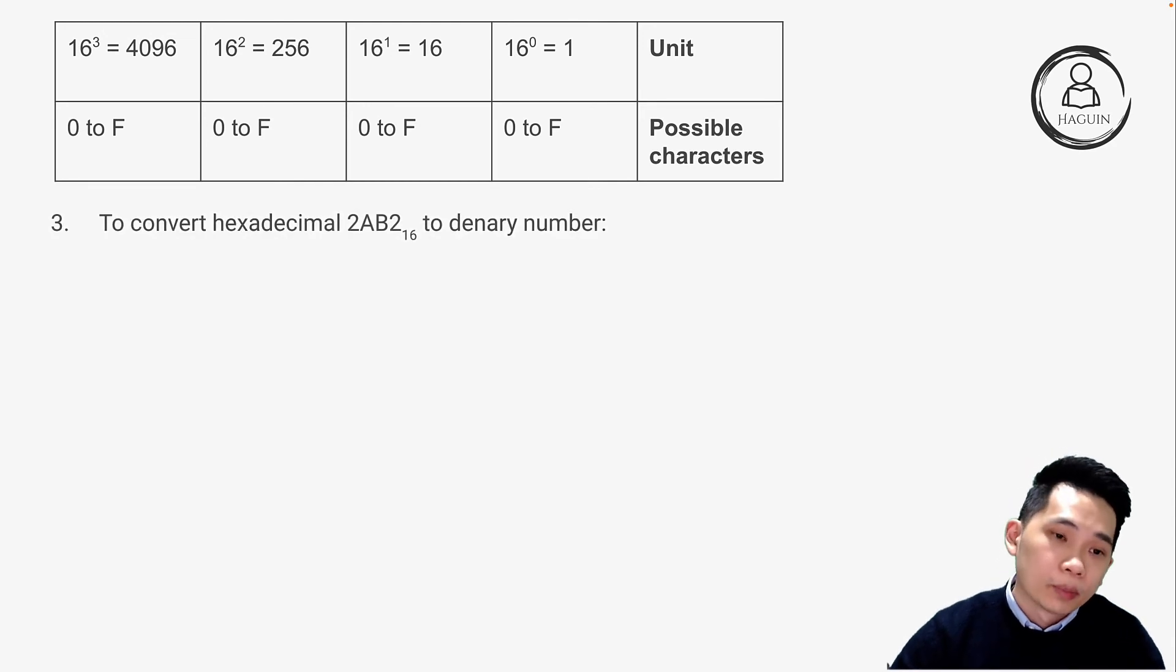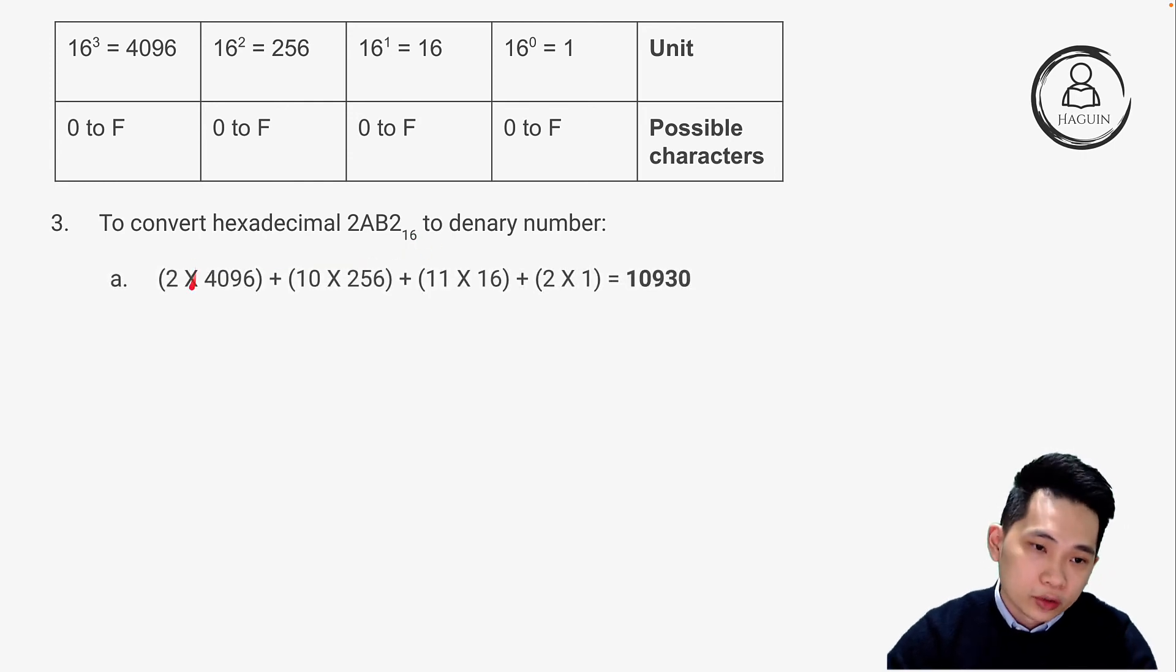Let's convert hexadecimal 2AB2 to a denary number. First, 2 times 4096, which is 16 to the power of 3. A stands for 10, so 10 times 256. B stands for 11, so 11 times 16. And 2 times 1. The sum will be 10930. This means 2AB2 in hexadecimal form represents 10930.